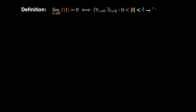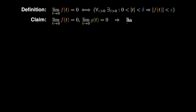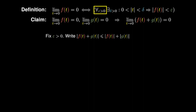Using this definition of a limit at zero being equal to zero, we claim that if two such functions both have limit zero at zero, then when you add these two functions, their limit at zero is still zero. We fix an epsilon greater than zero and upper bound |f + g| via |f| + |g|. The question then reduces to: can we upper bound each of these terms by epsilon over two?